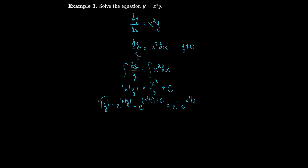So the absolute value of y equals e to the c times e to the x cubed over 3, meaning y equals plus or minus e to the c times e to the x cubed over 3. Since e to a constant is just another constant, we rename it. Calling it a, our solution is y equals a times e to the x cubed over 3, where a can equal e to the c, e to the negative c, or even 0, which recovers the y = 0 solution.